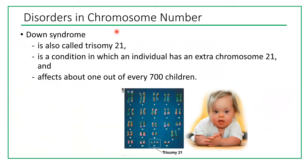A very well-known example is Down syndrome, called trisomy 21, meaning there are 3 copies of chromosome 21 instead of the normal 2. Down syndrome is a condition in which an individual has an extra chromosome 21, and it affects about 1 out of every 700 children. Looking at this baby's karyotype, we can see it is female because there are 2 X chromosomes, and chromosome 21 appears in triplicate — confirming Down syndrome.